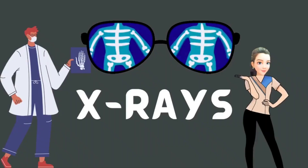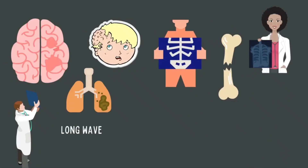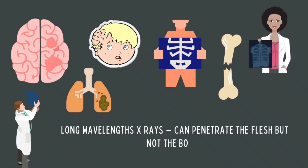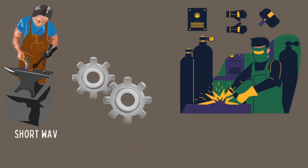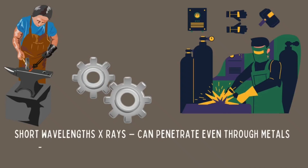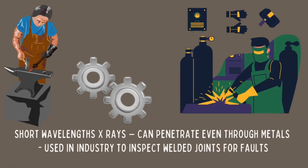Another one is the X-rays. Long-wavelength X-rays can penetrate flesh but not bones, and are used in X-ray photography to help doctors look inside the body. They are useful in diagnosing bone fractures and tumors. Short-wavelength X-rays can penetrate even through metals and are used in industry to inspect welded joints for faults. All X-rays are dangerous because they can damage healthy living cells of the body. This is why frequent exposure to X-rays should be avoided, as too much exposure can damage body tissues and cause skin cancer.